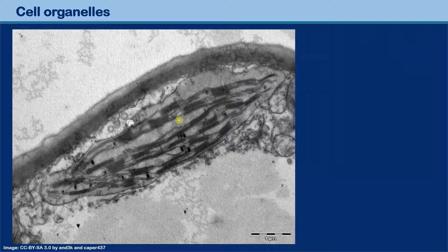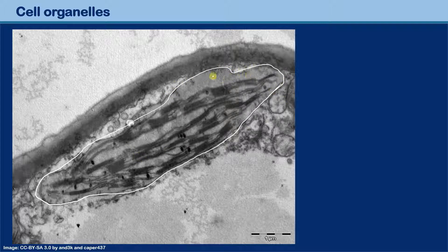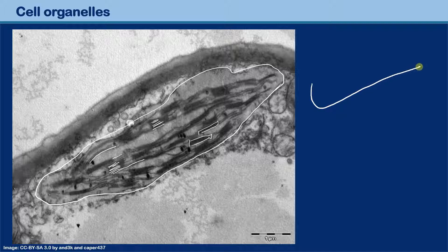This structure here is a chloroplast. So we're looking at a plant cell. On the outside here is the outer membrane. Inside, you see these dark regions — but in reality they're not squares. These are stacks of membranes — the thylakoid membranes. Some of them stretch across and are longer, and then there's a stack of thylakoid membranes.